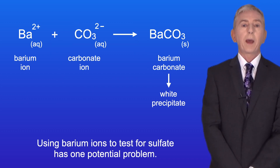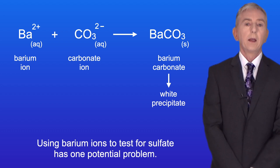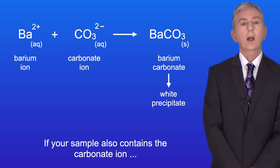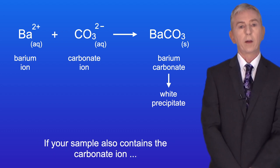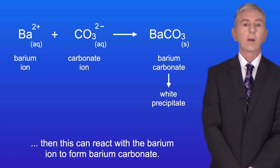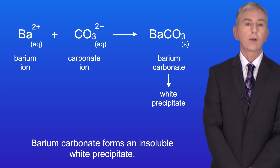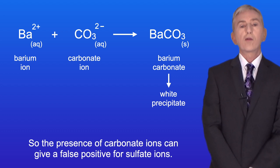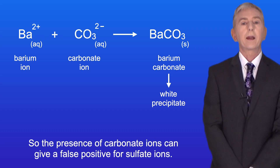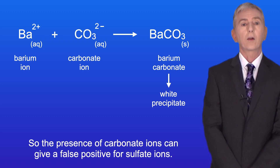Using barium ions to test for sulfate has one potential problem. If your sample also contains the carbonate ion, then this can react with the barium ion to form barium carbonate. Barium carbonate forms an insoluble white precipitate. So the presence of carbonate ions can give a false positive for sulfate ions.